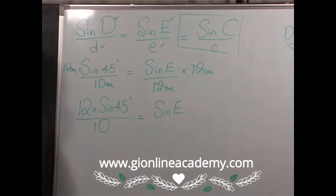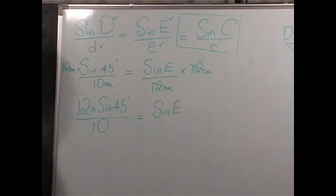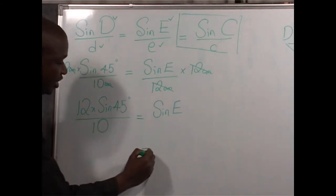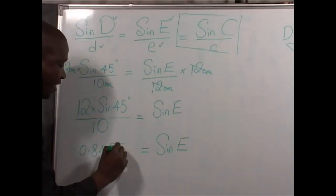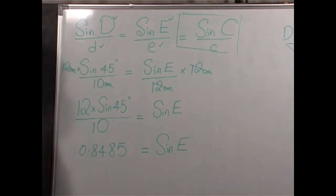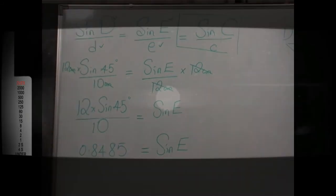At this point, I want you to use your calculators to evaluate 12 by sine of 45 degrees divided by 10. If you have done your calculations nicely, you must be in a position to get the sine of E as being equal to 0.8485, that is, to four decimal places.